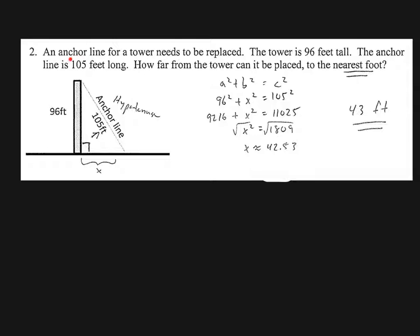we have an anchor line, right? It's talking about this anchor line is right here as it's labeled in the picture. For a tower, it needs to be replaced, and the tower is 96 feet tall and the anchor line is 105 feet long. How far from the tower? So what we're looking for is this length right here. That's my X, as noted in my answer key.